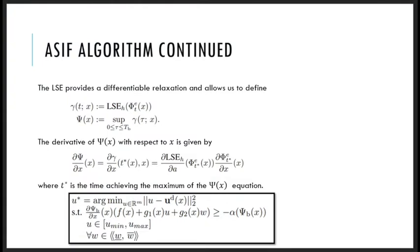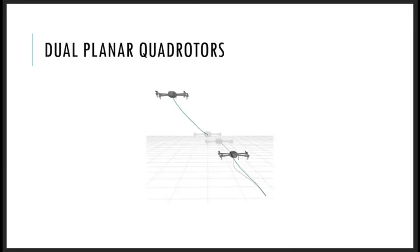The log sum exponential provides a differentiable relaxation and allows us to define gamma, where phi of ET is the particular state of the embedding system at time t with the initial state X. We then define psi as the supremum of gamma within the prediction horizon. We can also define the derivative of psi with respect to X. The derivative of phi in the right-hand side is determined via sensitivity analysis, where t star is the time achieving the supremum in the right-hand side of the definition from psi of X. We can now construct an optimization problem to solve for u star. Nominally, the program will act as a feed-through for a primary controller unless the control input violates the CBF-based constraint.